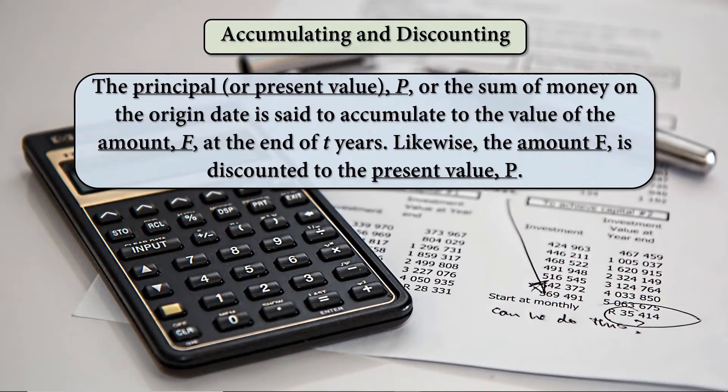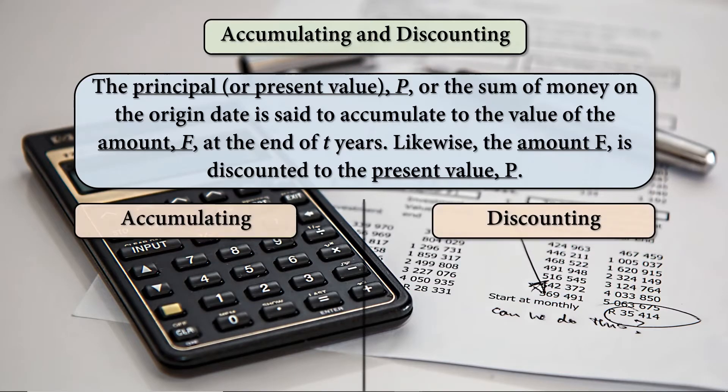Likewise, the amount F is discounted to the present value P. So now what is the difference between the accumulating and the discounting part?